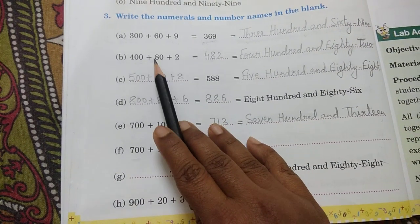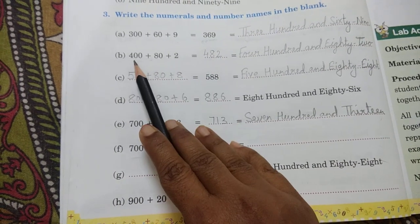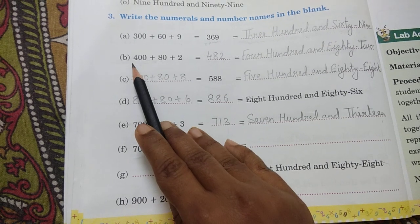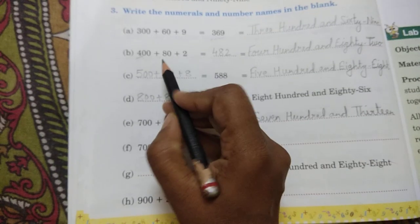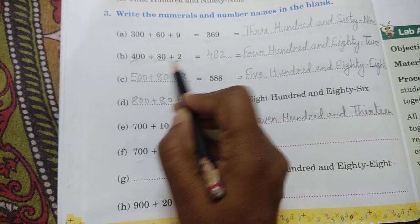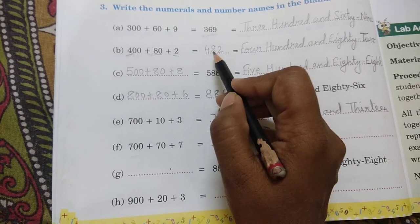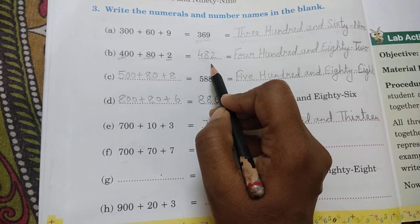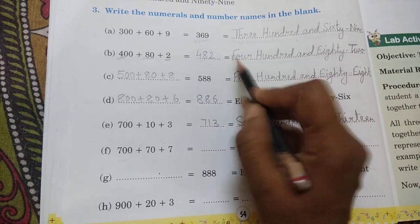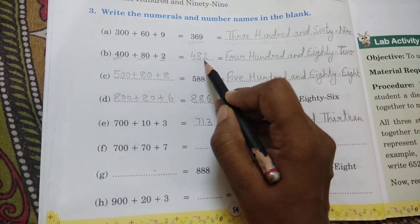Here we have 400 plus 80 plus 2. So how do we read this number in short form? This is 4, this is 8, this is 2. What is 482? When we read this number, this number is four hundred and eighty-two.